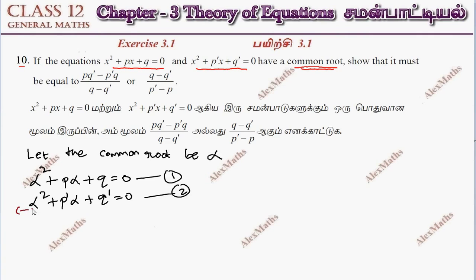So, now we subtract the two equations with sign change. The first term alpha² minus alpha² cancels out.